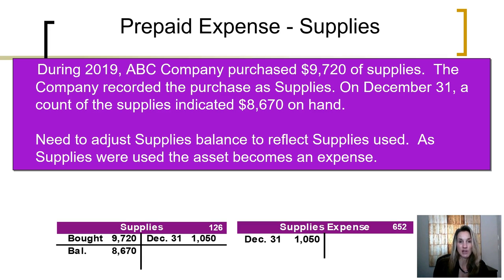As companies use their assets, they are incurring an expense — the cost of using those assets to help earn revenues. Thus, we need to adjust supplies to reflect the cost of the supplies that were used. As supplies were used, the asset becomes an expense: supplies expense.